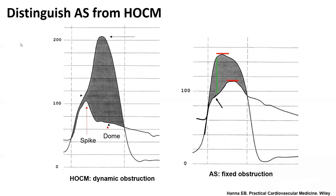Please memorize these slides to understand the difference between dynamic LV-OT obstruction hemodynamics and aortic stenosis hemodynamics. On occasion, you can have another form of fixed obstruction with similar morphology, such as the sub-aortic membrane — sub-aortic aortic stenosis — which is a congenital membrane. That sub-aortic AS will have a morphology somewhat similar to aortic stenosis, depending on its severity. Most often in adults, the sub-aortic stenosis is not severe.